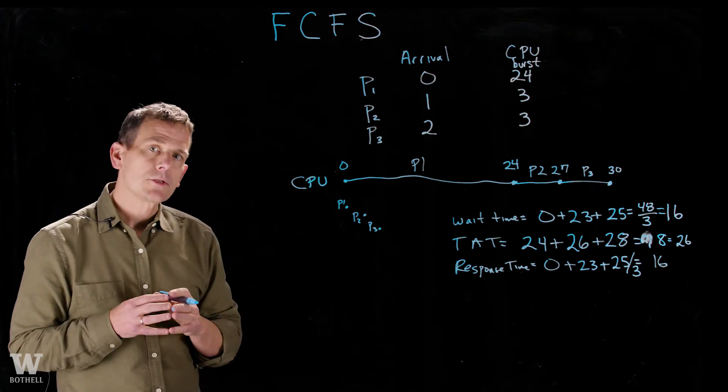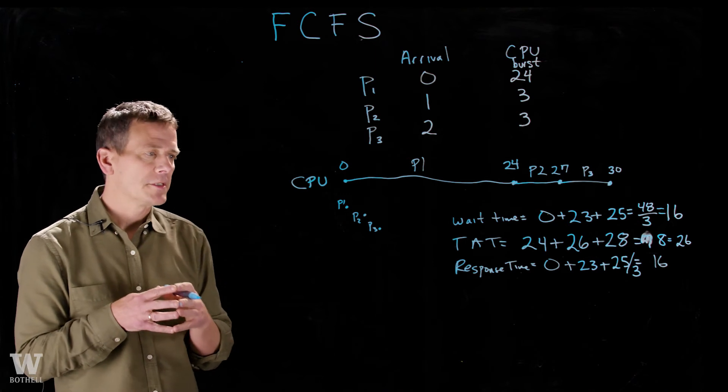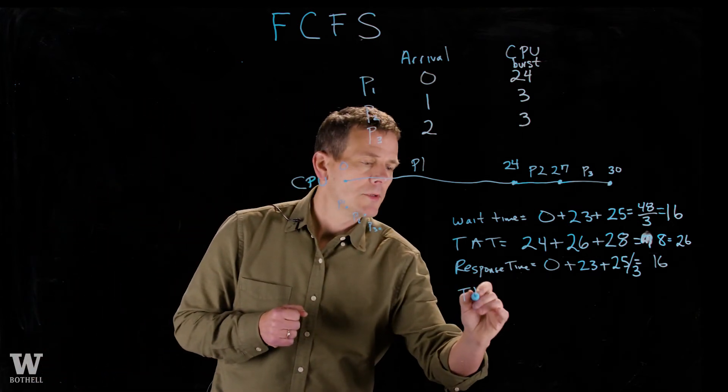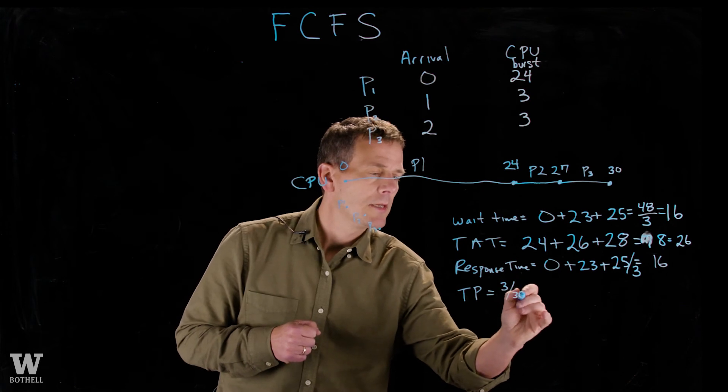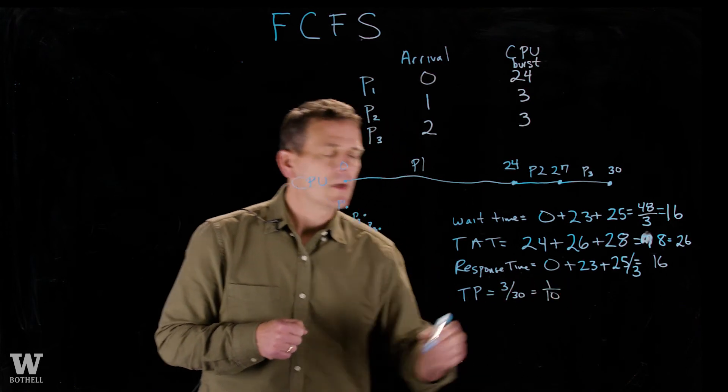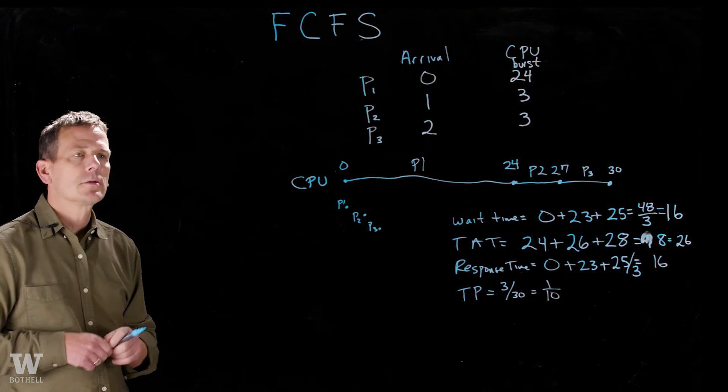Last metric is throughput, which is the amount of processes you can do in a given amount of time. And so the throughput here is we get three processes done in 30 time units. So basically one process every 10 time units will be our throughput.